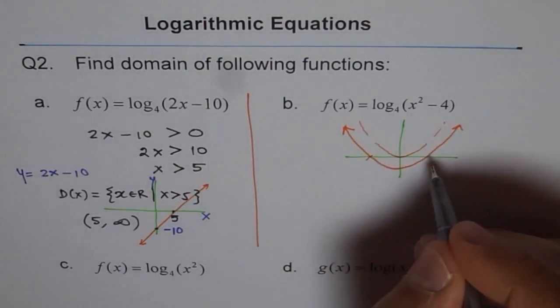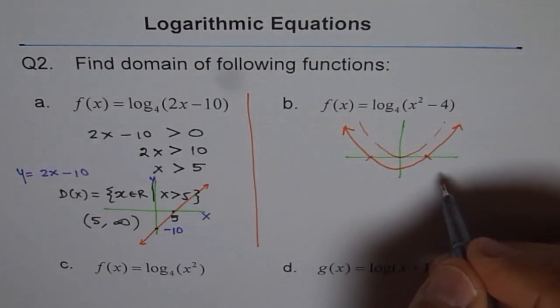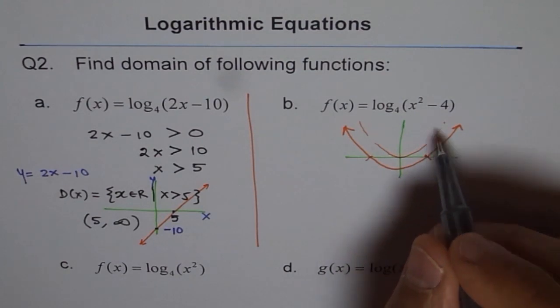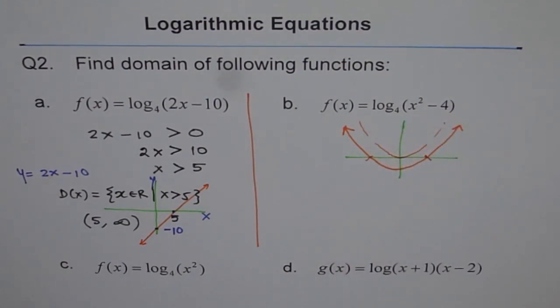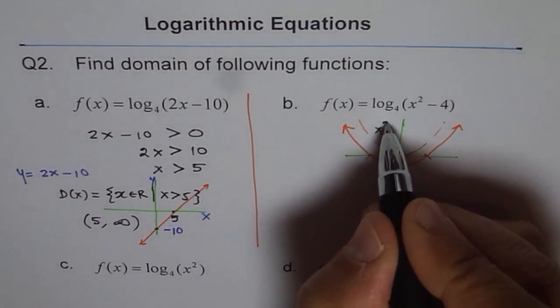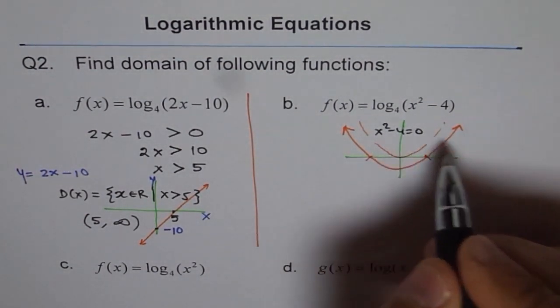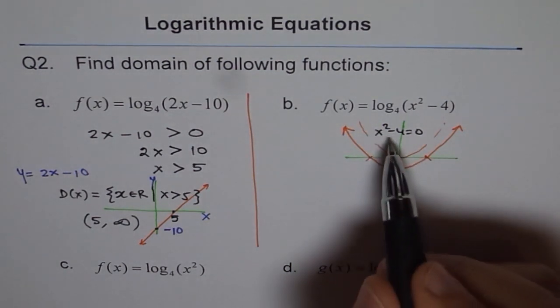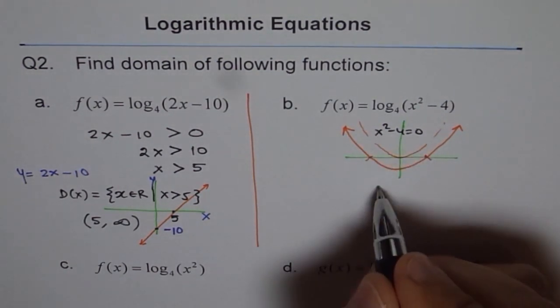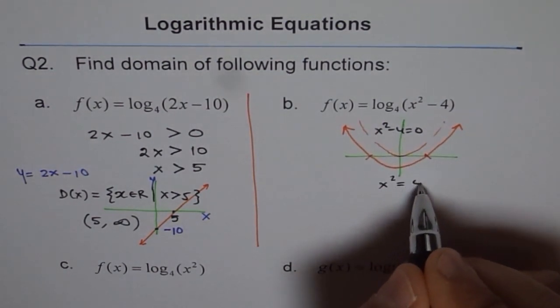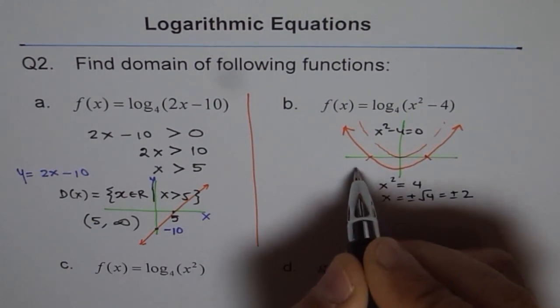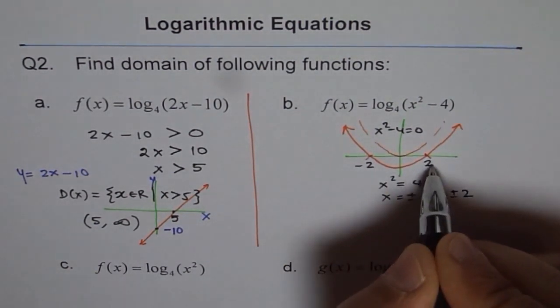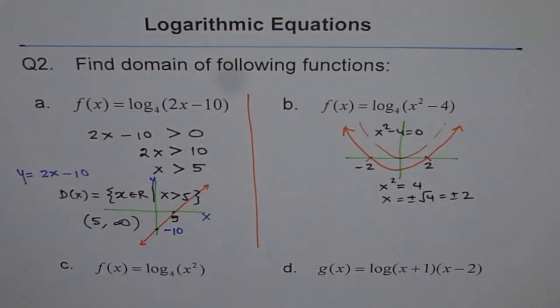Now which are these points? These are my x intercepts. And these zeros I will get when x² - 4 = 0. We can calculate. x² - 4 = 0 means x² = 4, or x = ±√4, which is ±2. So I have -2 here and +2 here.